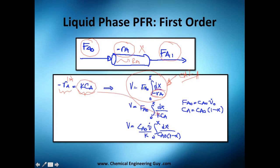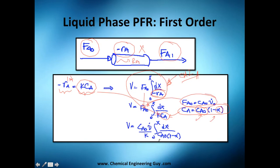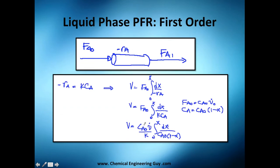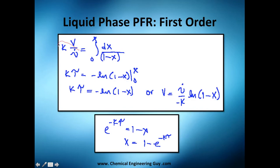The first step is to substitute the rate expression into the design equation. The molar flow rate of A at the inlet goes outside the integral, and we integrate over dX. Next, I change the concentration into terms of conversion using the formula: C_A = C_A0 times (1 minus X). I also change the flow rate term. Since k is a constant it can be taken outside the integral, as can the initial concentration, leaving the volumetric flow rate and the integral in X.